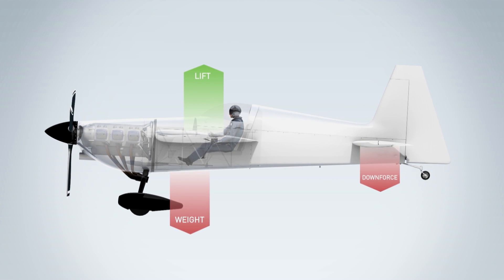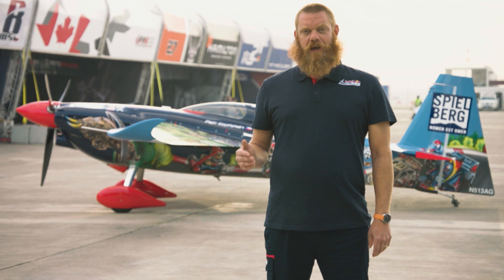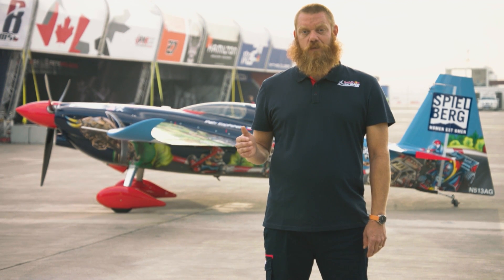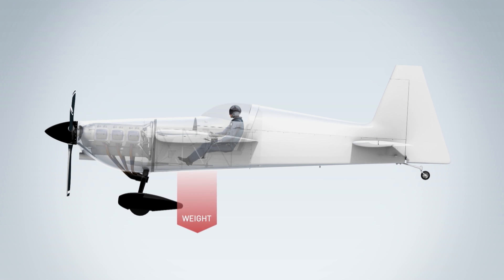If you shift weight around in the aircraft, you can shift the CG point as well. If you move the weight more towards the tail, as most of the race teams do, you will have what we call a more aft CG.